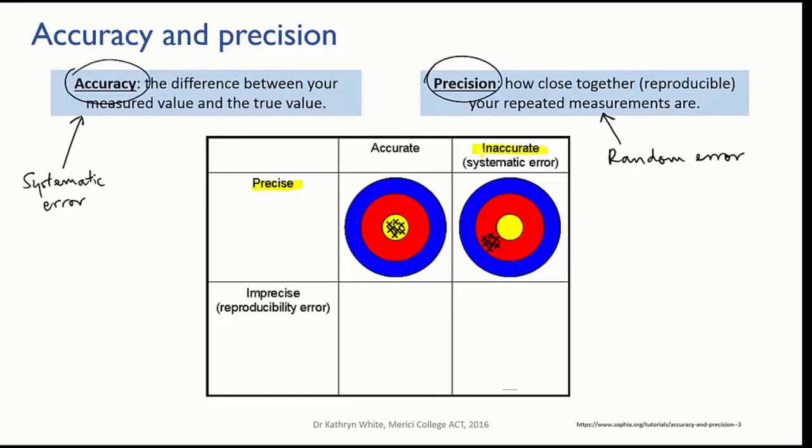However, something is causing a high systematic error. Each of her shots is to the left and below the bullseye. Perhaps there's a steady wind blowing to the left. If she identifies this problem, she can compensate for it.